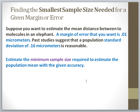In this particular problem, suppose you want to estimate the mean or average distance between two molecules in an elephant. An elephant has trillions of molecules, so obviously you're going to need to take a sample. But sampling the molecules in an elephant can be very time-consuming, so you want to take the smallest sample possible, but you want your margin of error in this case to be 0.01 micrometers. You're also being told that the population standard deviation is 0.16. What is the minimum sample size required to give you this accuracy?